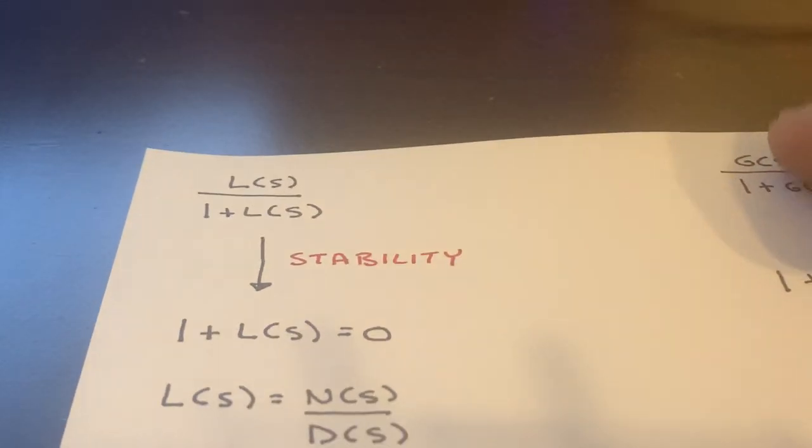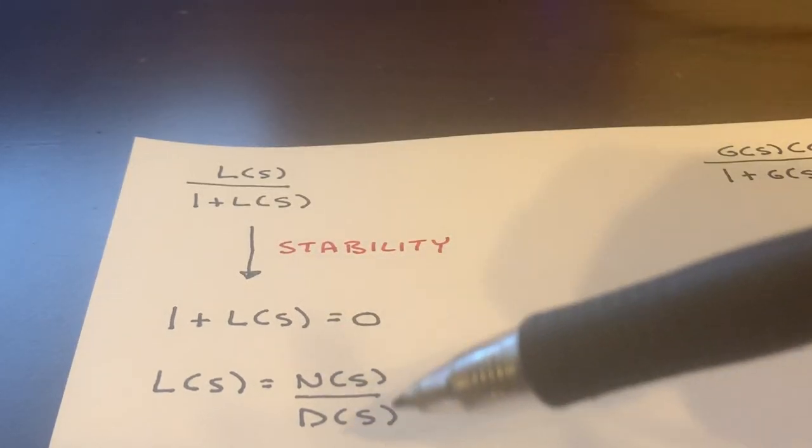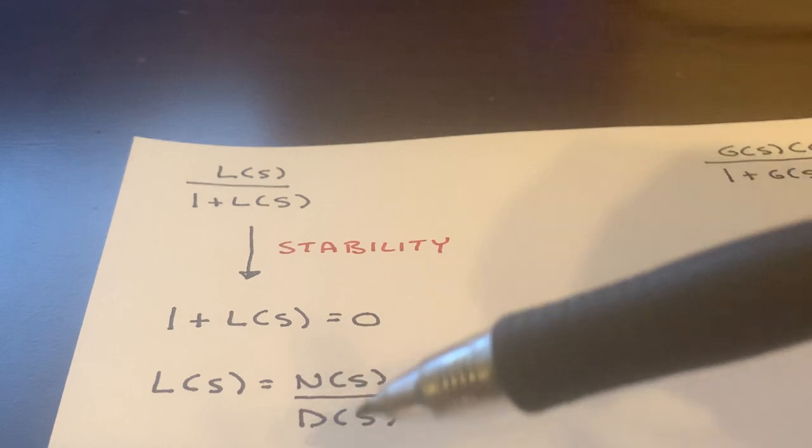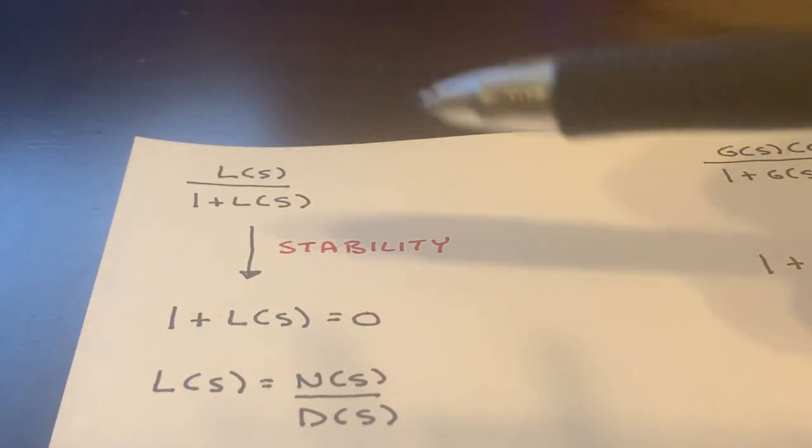Now, of course, L of S is typically a fraction, right? So it's known as a rational function. So a rational function is a function of a fraction of polynomials. And so we have N of S over D of S.